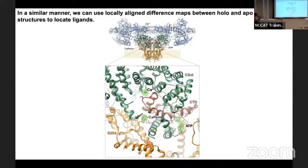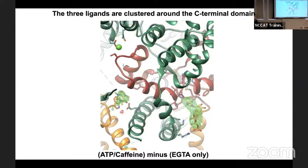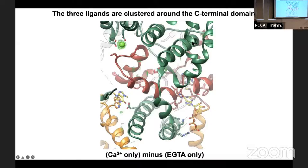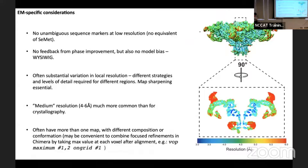Use any and all available information to guide model building. For example, when building the ryanodine receptor at very low resolution, we used 3D classification to identify a class where one entire protomer was disordered, helping us guess the protomer boundaries. Locally aligned difference maps between a holostructure with a ligand and an apostructure without can confirm ligand placement — subtracting aligned maps reveals green difference density at ligand-bound positions, which can be done pairwise for individual ligands like calcium, ATP, and caffeine.